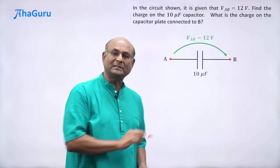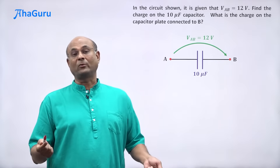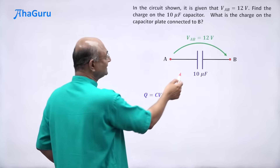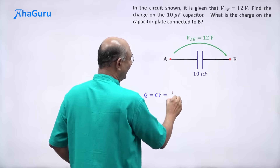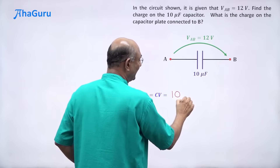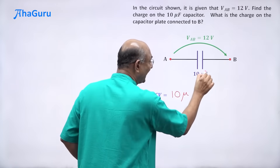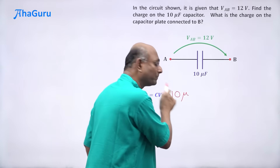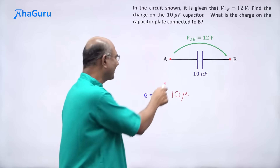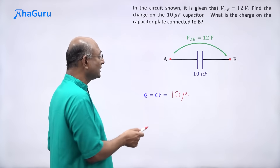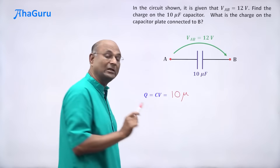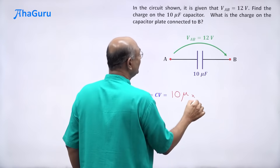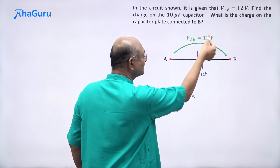The formula for the charge on a capacitor is Q equals CV. The capacitance value is 10 microfarad. You always write micro — remember, farads is the SI unit. So if it is 10 microfarad, put 10 micro; you must include it because this is 10 to the power of minus 6. That is C into V, and V is 12 volts — volts is SI units.